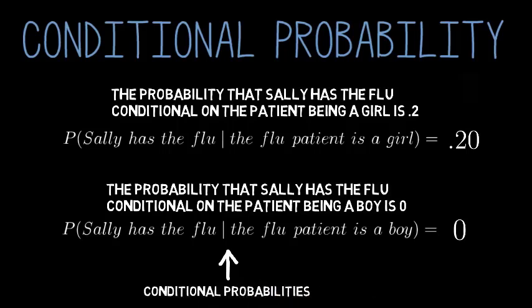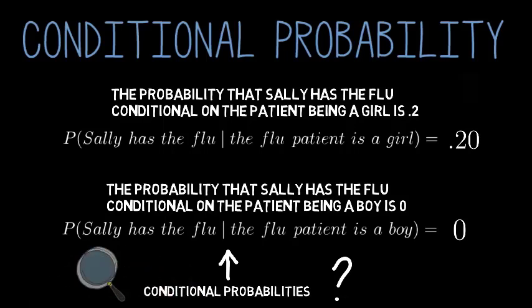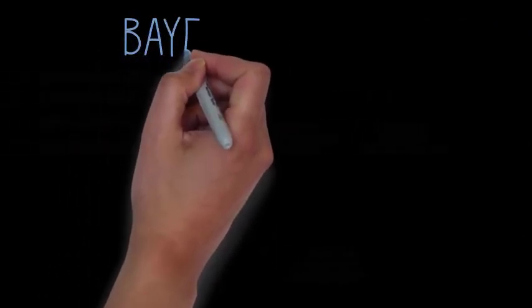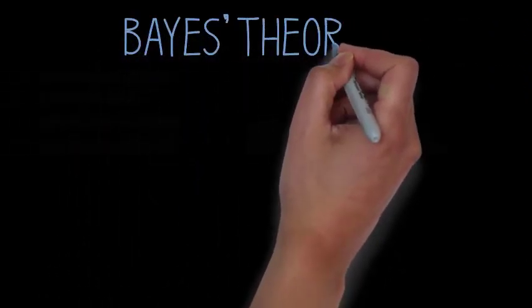Now, here's the thing. Sometimes you don't know what your conditional probabilities should be. In other words, you know that you might encounter some new evidence in the future, but you don't yet know how that evidence should affect the probability you assign to some hypothesis. Here's where Bayes' theorem comes in. It gives you a way of figuring out what your conditional probabilities should be.